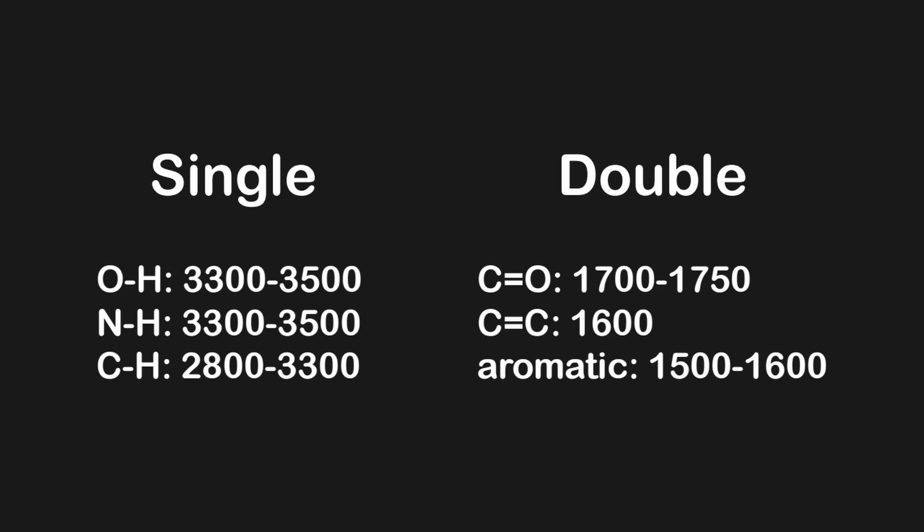For the double bond region, we're looking at a C double bonded to an O at around 1700 to 1750, C double bonded to another carbon at around 1600, and aromatic carbons somewhere around 1500 to 1600.